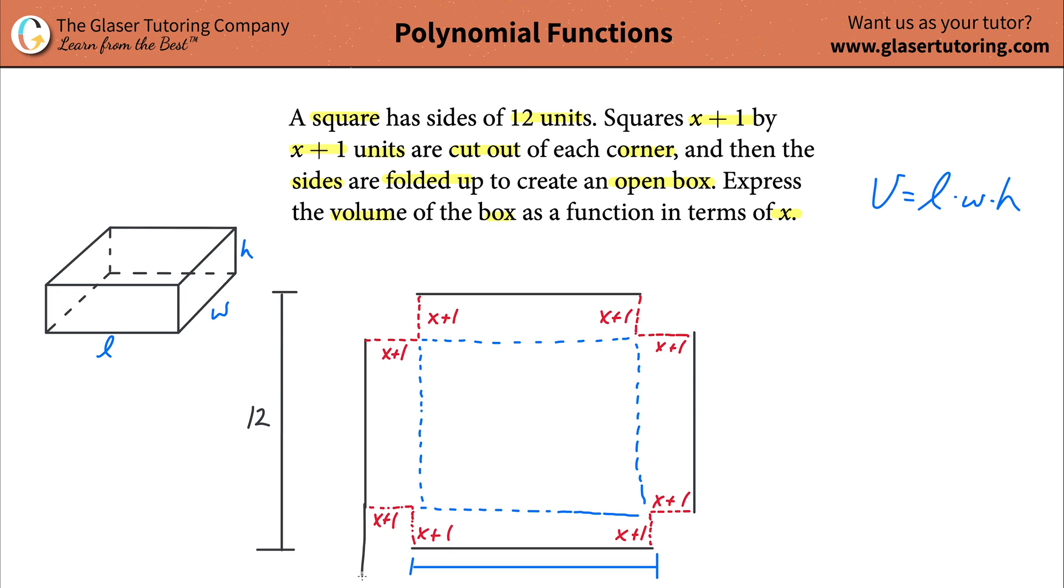The length of the box would basically be equal to this length right here. This blue line would have been the length of the front of the box. What is that length? Let's take a look at what we do know. We know that the overall length from this point all the way down to that point, it's a square, so each side is 12. So this is 12.